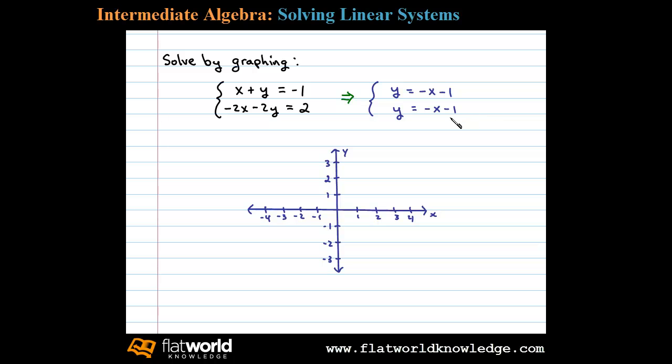Let's begin with the y-intercept: 0 comma negative 1. Here we have a slope of negative 1, so use negative 1 as the rise and one unit as the run. Now we can use these two points to graph both of the lines.